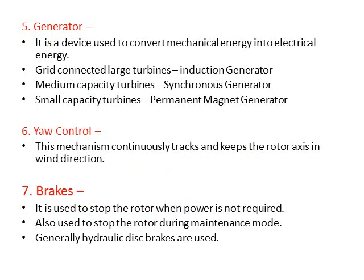Next is the generator. It is a device used to convert mechanical energy into electrical energy. Three types of generators can be used: for large turbines, induction generators; for medium turbines, synchronous generators; and for small turbines, permanent magnet generators.